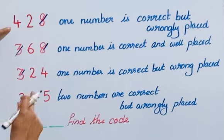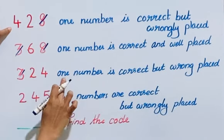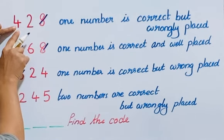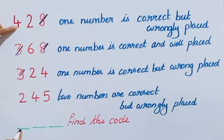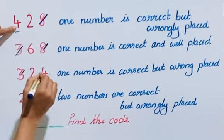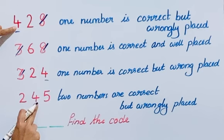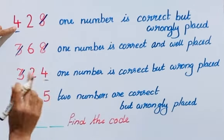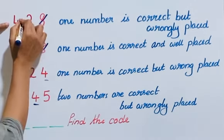Looking at clues 1 and 4: in both, the correct number is wrongly placed. If we choose 4 as the correct number in clue 1 (428), it can't be in its current position. And 4 also appears in clue 4 (245), where it is also wrongly placed. Since 4 can't be placed in any of the three positions without contradiction, it can't be in the code at all. Hence, 4 is wrong.